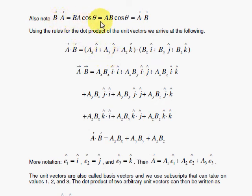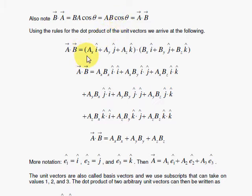We can look at the dot product in two forms. One with the definition we gave at the beginning — the magnitudes times the cosine of the angle. Notice that when we give this definition, it doesn't matter which one is first: b dot a is the same as a dot b, because you're multiplying the lengths of the vectors in any order, times the cosine of theta. If we apply the rules for the unit vectors, we get our other way of looking at this. We have vector a and vector b written out, and when we use the dot product here, we'll use a distributive action.